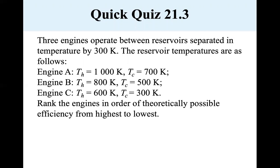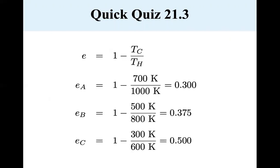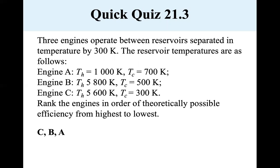Well, it's hard to just look at those and tell. So I did a little calculating here for you. Since E is equal to 1 minus T-cold over T-hot, we have E of A is 1 minus 700 over 1000, which equals 0.300. Efficiency of B is 0.375. And the efficiency of C is equal to 0.5. 300 K divided by 600 K is 0.5, so 1 minus 0.5 is 0.5. So we see that the rankings of highest to lowest are C, B, and A.